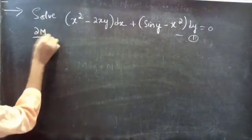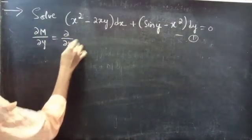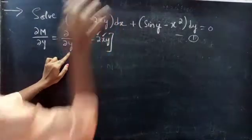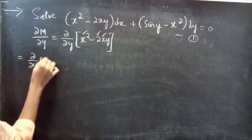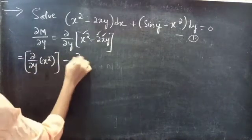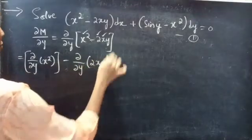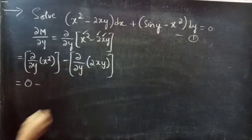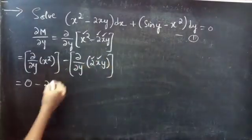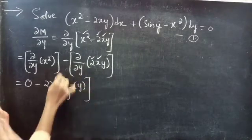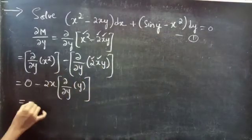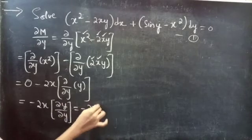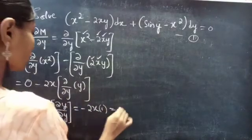The partial derivative of M, that is ∂M/∂y, equals ∂/∂y of (x squared minus 2xy). Since we are doing the partial derivative with respect to y, we put x as constant. This equals ∂/∂y of x squared minus ∂/∂y of 2xy. The partial derivative of constant x squared with respect to y is 0, and 2 and x are constants, so we write this as minus 2x times ∂y/∂y, which equals minus 2x times 1, giving us minus 2x.